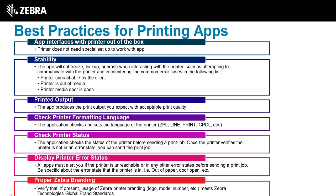Another best practice is checking the printer formatting language. Link OS products can all accept ZPL, but not all printers default to ZPL out of the box. When writing an app that interfaces with multiple printers, check what language the printer is in first and set it programmatically. In testing over 100 applications last year, this issue came up 55% of the time — printers with a different default language would fail the out-of-the-box print test.